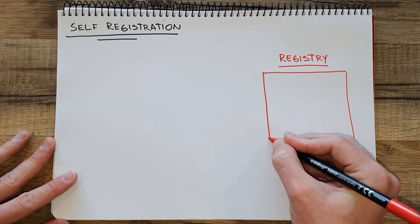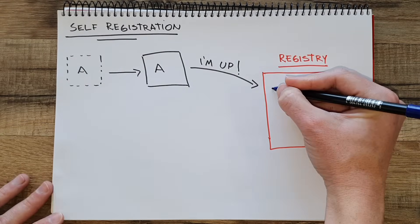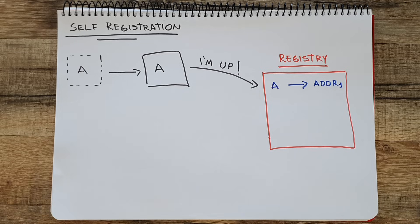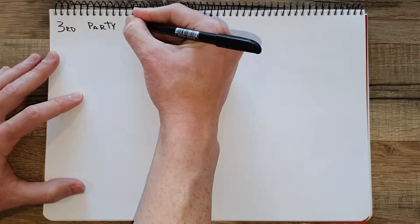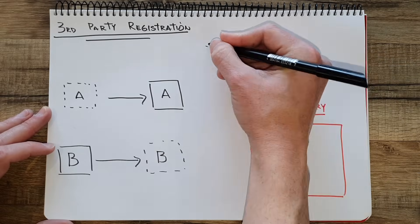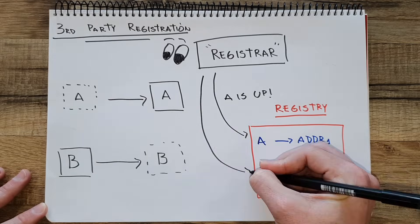Another way to categorize service discovery is by how the service registry is maintained. There are two ways. One is self-registration, where every service is responsible for updating the service registry itself — notifying the registry when it starts up to be added, when it shuts down to be removed, and also if it has any problems. On the other hand, we have third-party registration, where an external application called the registrar observes the status of services and updates the service registry automatically.